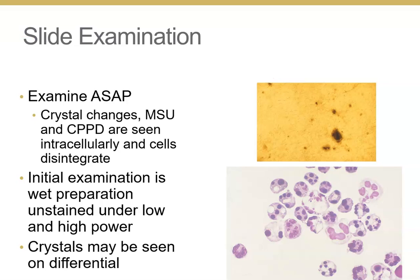Examine the fluid as soon as possible. Under low and high power on a wet prep, look for crystals. You may see rectangular crystals inside neutrophils on the differential — or you may see large numbers of crystals as hash marks on low power. Look at this as soon as you possibly can.